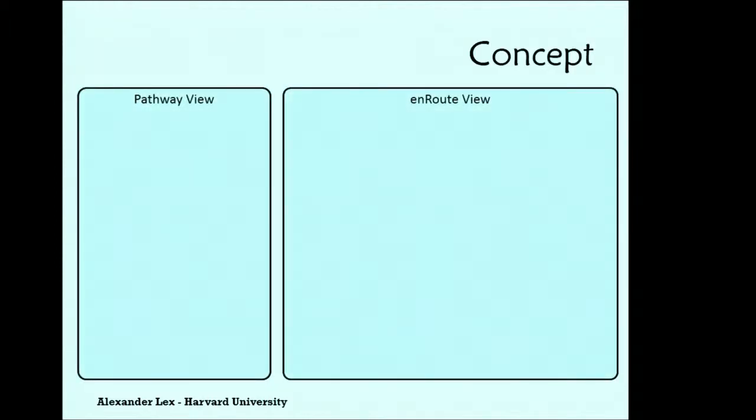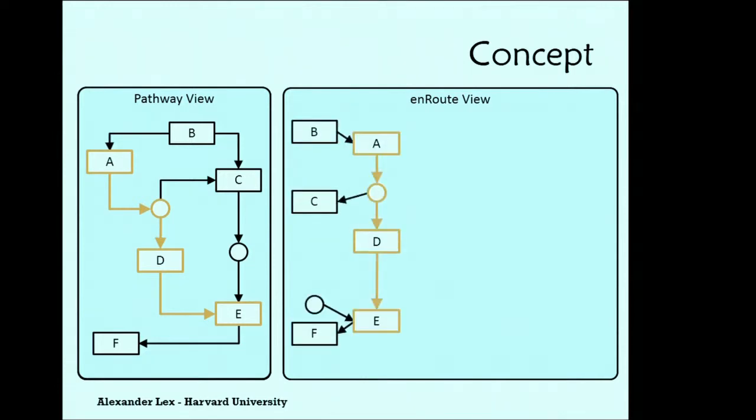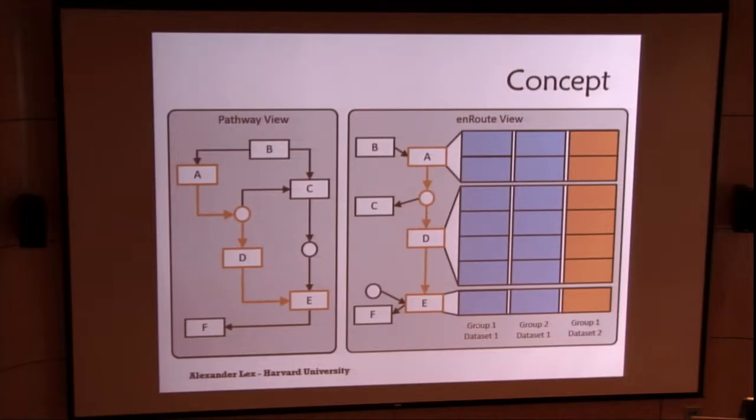So what is the concept of the visualization technique? We have two views. On the left-hand side, you can see a pathway view. It's the same picture as I've shown you before. And out of this pathway, we select one path. We let the user select one path. So in this case, from A to E. And then we extract this path and put it in the enRoute view. And we try to preserve the topology as good as possible by just showing you where an incoming edge is, where an outgoing edge is. But it's, of course, not the whole topology. So if you would like to see the whole topology, you'll have to refer to the pathway view. But now that we have a linear structure here, you're able to put a lot of experimental data next to your linearized version of the pathway. And that's what we're doing. So here you can also put different groups. So here is one group. Here's another group. And here you can also put different data sets. So basically, by doing this little trick, you get some space for showing experimental data.